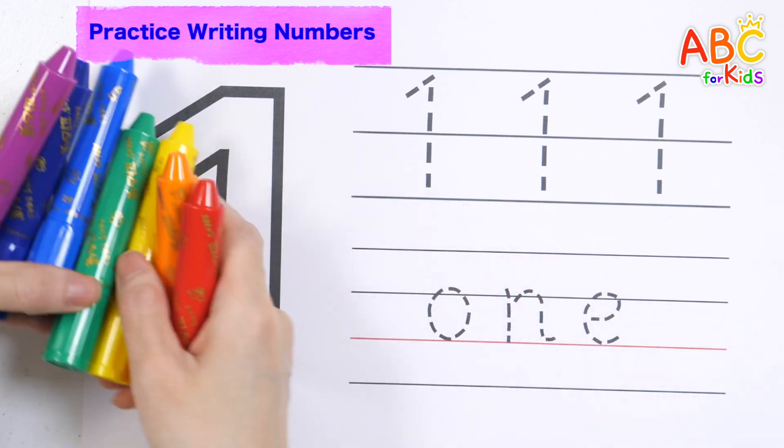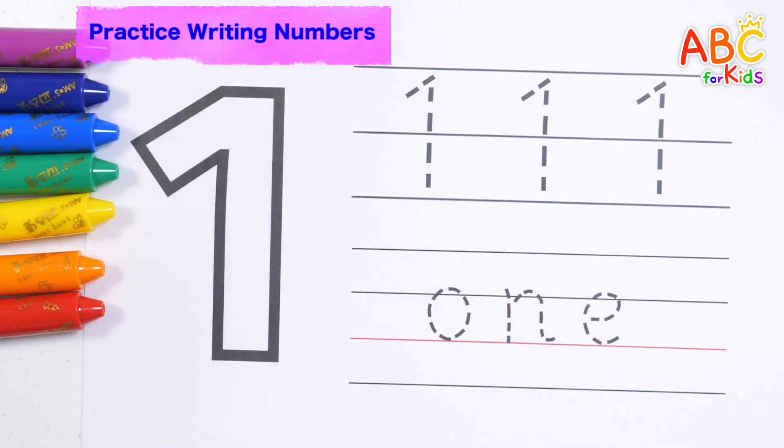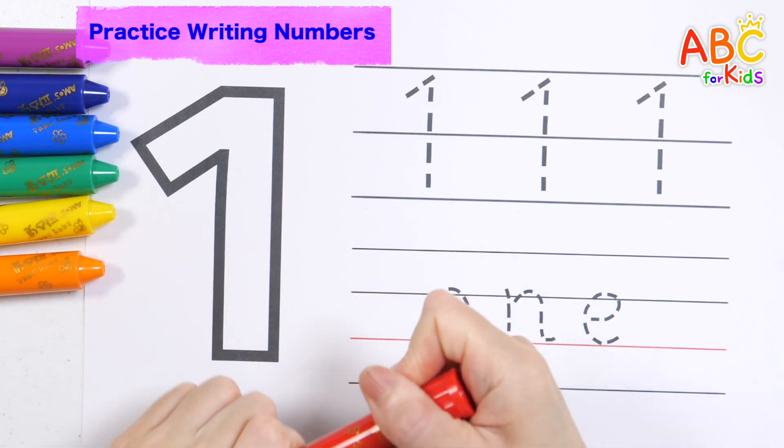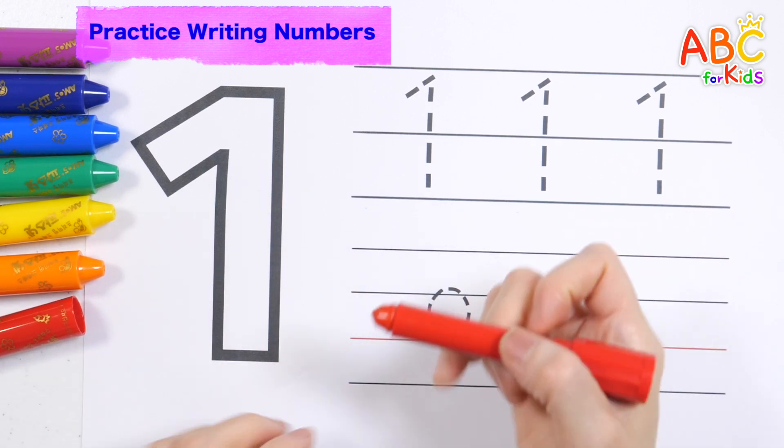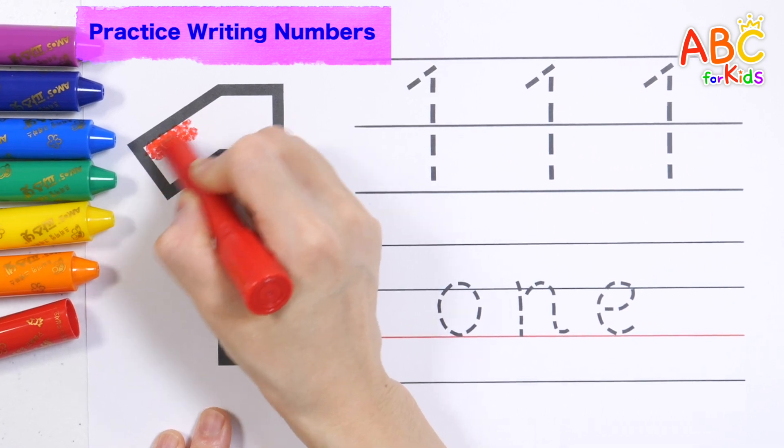Color in the number 1 with a red crayon and repeat the numbers along the dotted lines. H, I, J, K, L, M, N, O, P, Q, R.